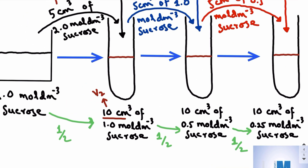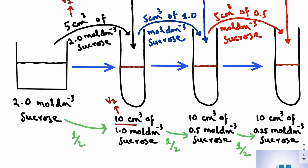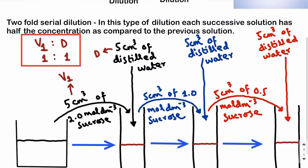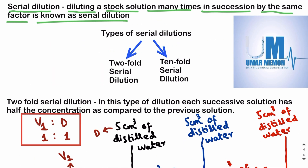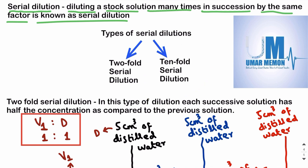So whenever we carry out serial dilution, we carry out successive dilutions and at each step the concentration of the solution is reduced by the same factor — for example, by half or by 10 times. On that basis we have two types: twofold serial dilution, where concentration is reduced by half at each step, and tenfold serial dilution, where concentration is reduced 10 times at each step.